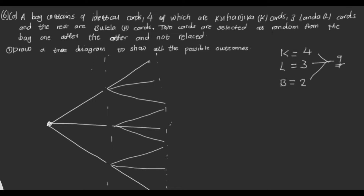In the tree diagram, the first outcome is K for Kwanjuka. We also have L for Landa and V for Vulela. So from the first pick, we have three branches — K, L, and V — representing the three possible outcomes.